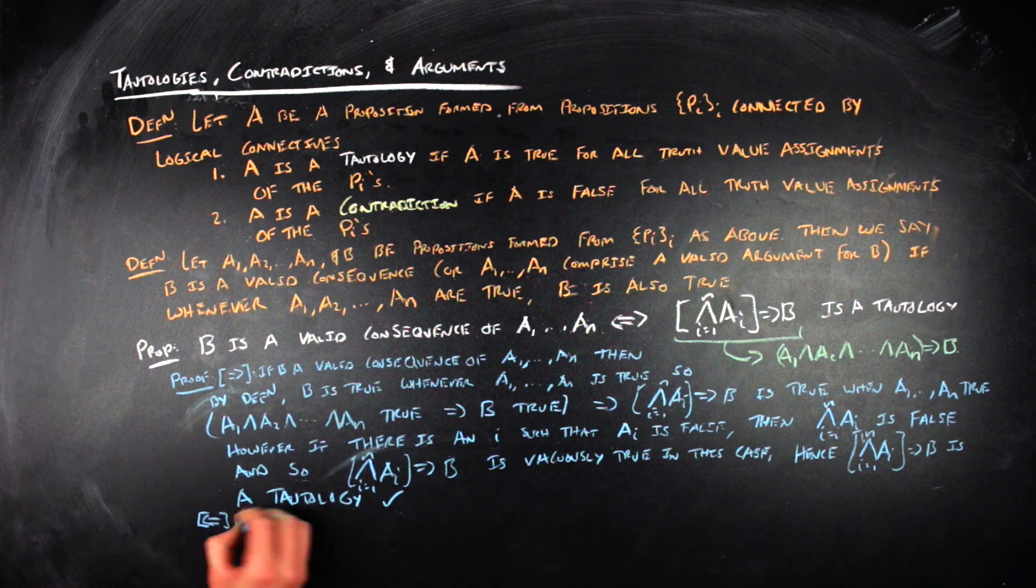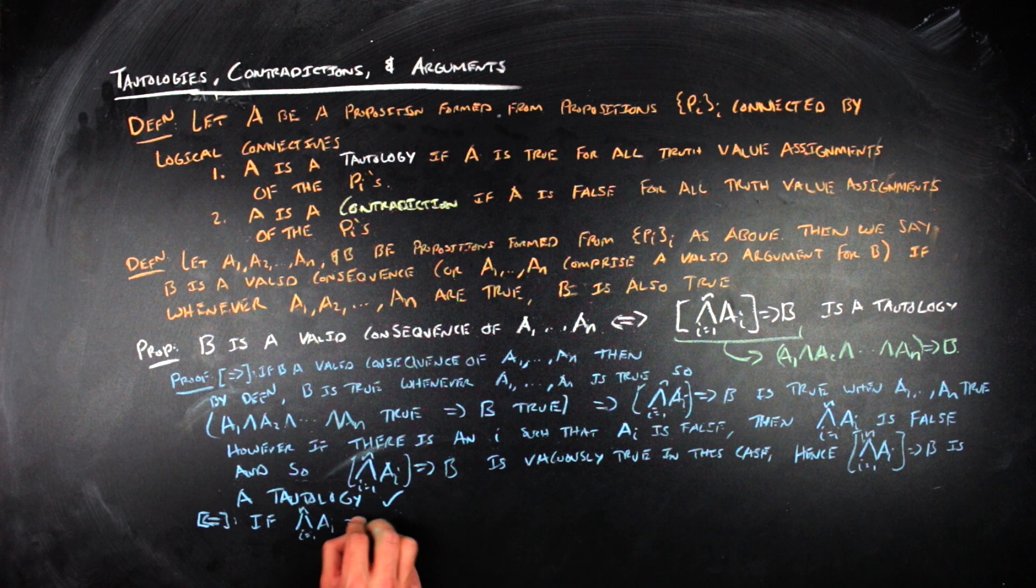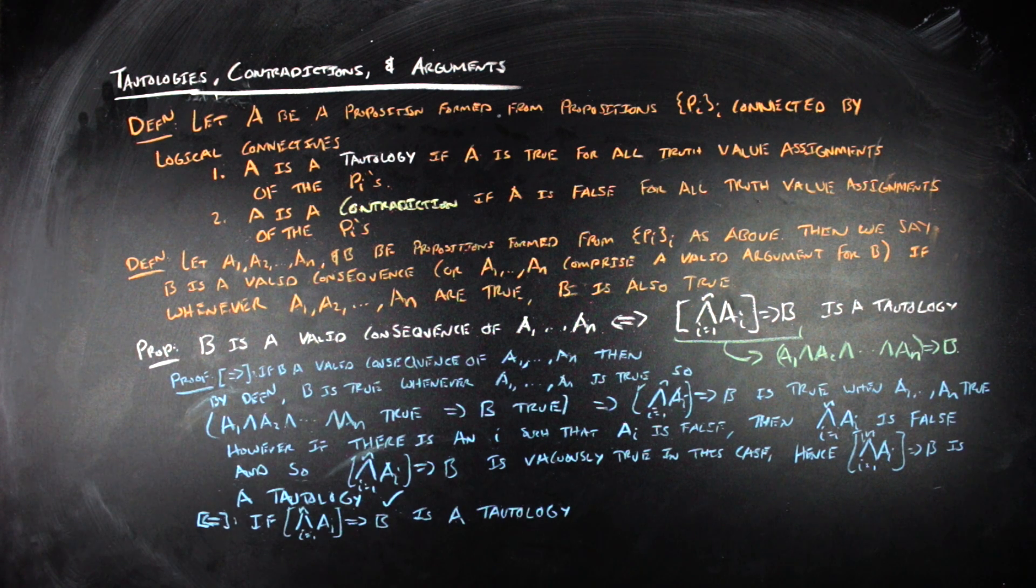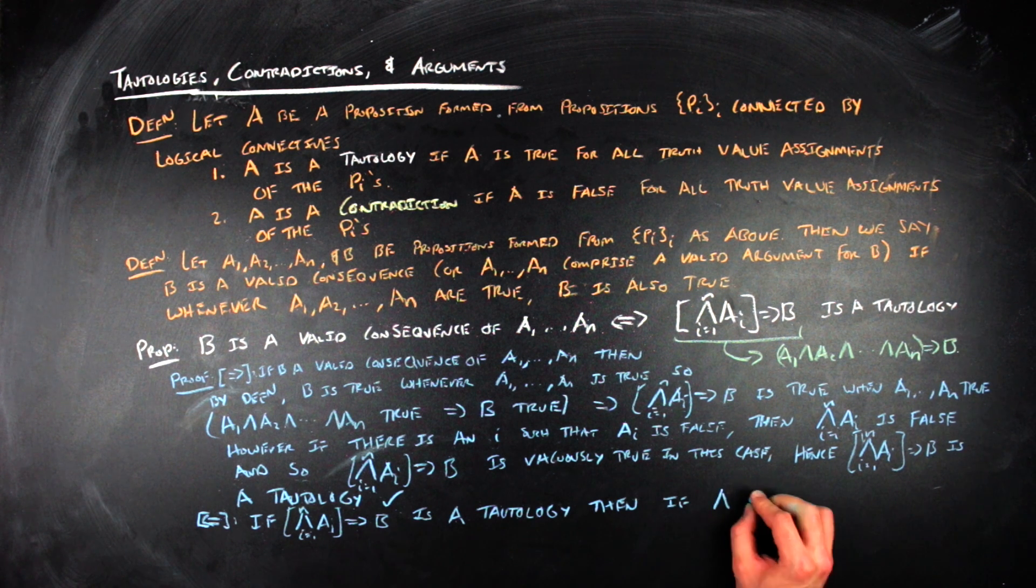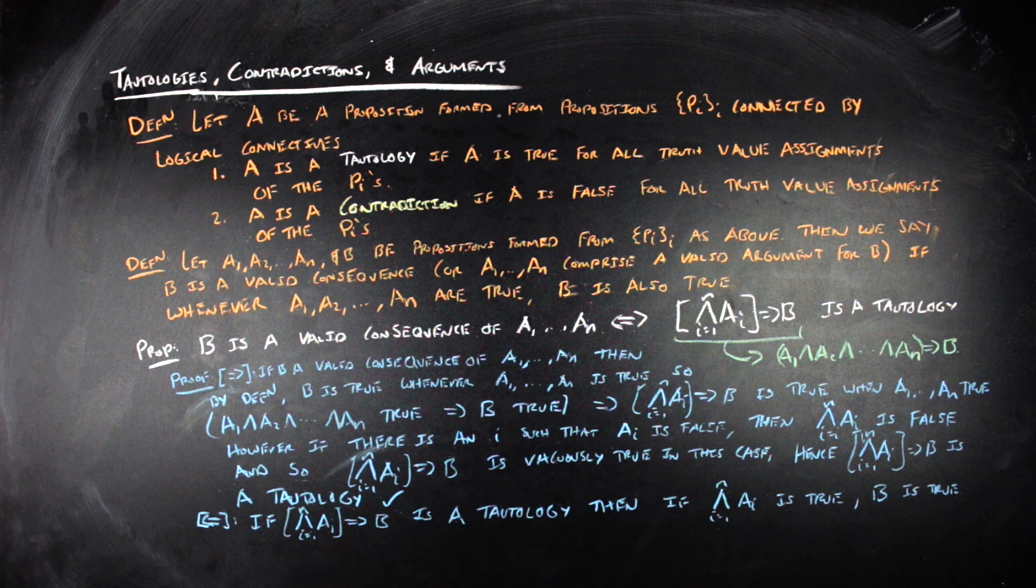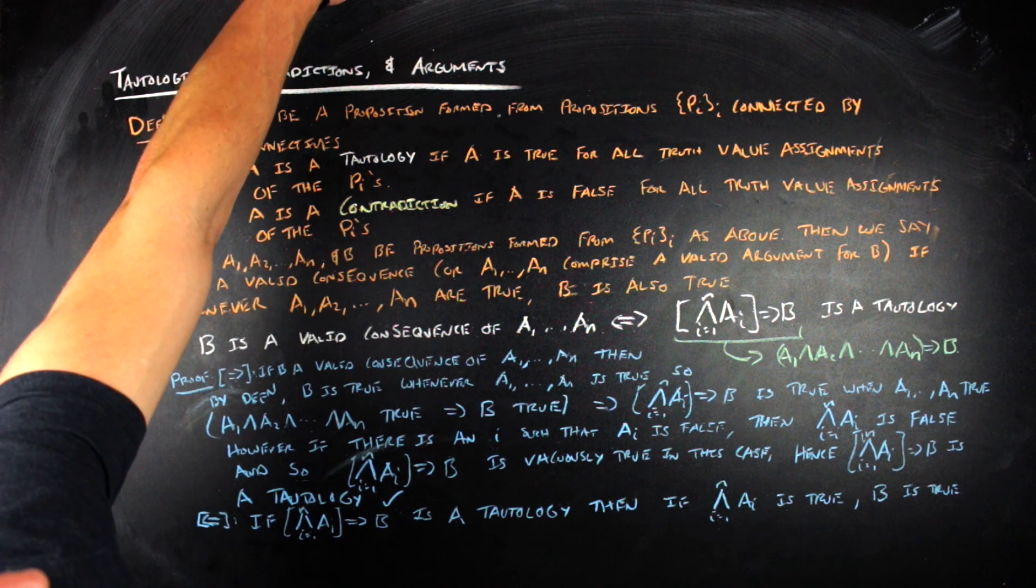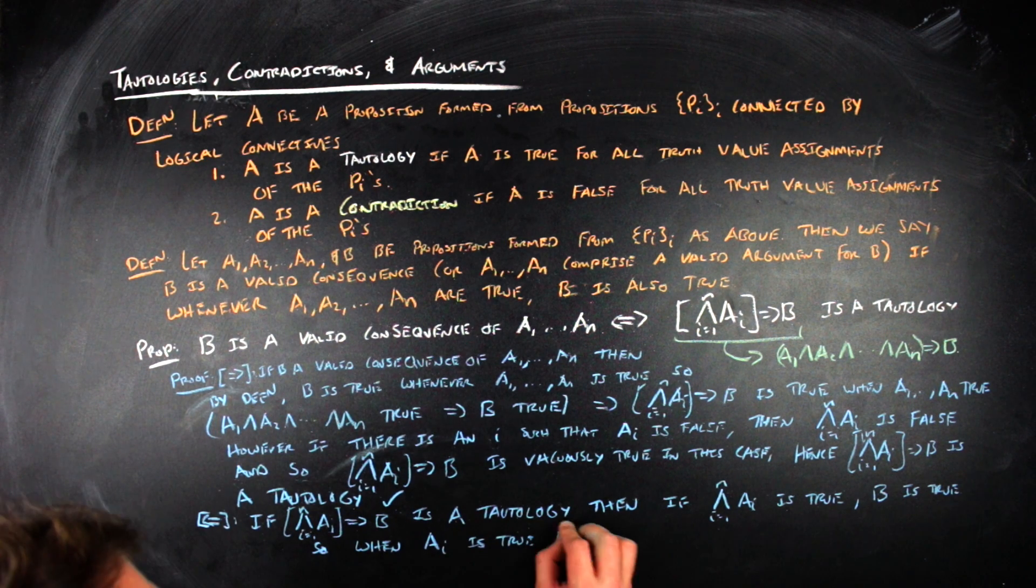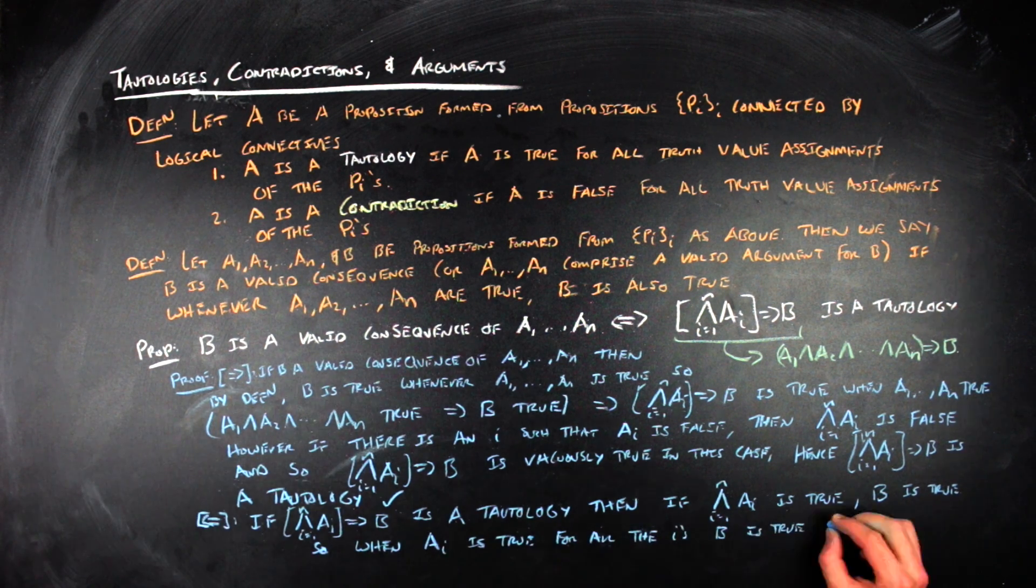In the reverse direction, this is just very quick. So if your Frankenstein conditional of ANDing together all of the A's and implying B is true all the time, right, it's a tautology, then it's also true in the case when all of the A_i's are true. And so that means that when all of the A_i's are true, and you imply B must also then be true. Which then completes the proof of that proposition.